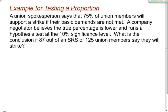I'm going to start by highlighting a few things within this problem. The first thing I want to highlight is the fact that I'm dealing with a proportion. As soon as we start talking about percentages, that's the same as dealing with a proportion, so I know this is going to be a hypothesis test for a proportion. The second thing I want to point out is the company negotiator believes the true percentage is lower and runs a hypothesis test at the 10% significance level. Those three things are going to help me as I move forward.